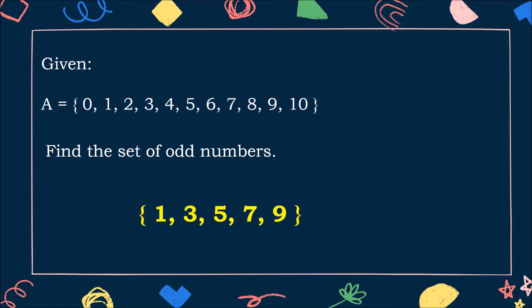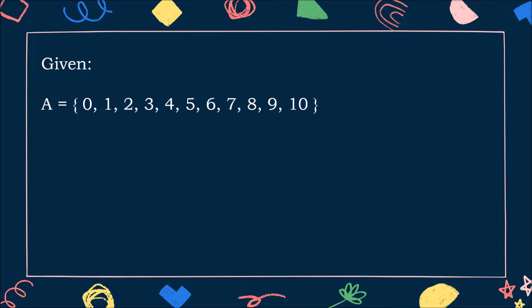Excellent! The set of odd numbers are 1, 3, 5, 7, and 9. Now, how about find the sets of multiples of 4? Great! The sets of multiples of 4 are 4 and 8.